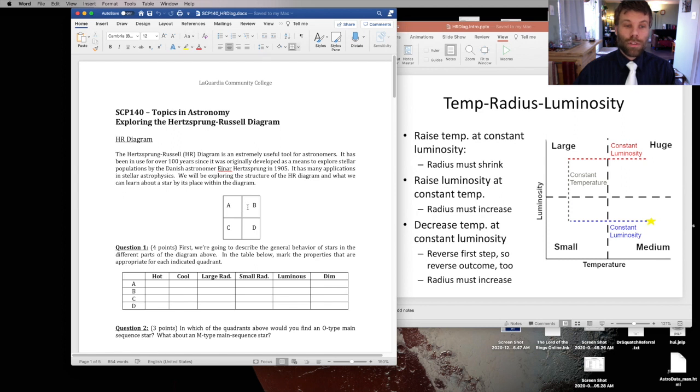Let's look at how we can interpret the position of a star on the HR diagram using that information. In the lab, you'll see we have this diagram with four quadrants labeled A through D, as promised. And so what we want to do is, for each of those quadrants, figure out whether a star in that quadrant is hot or cool, large or small, and luminous or dim.